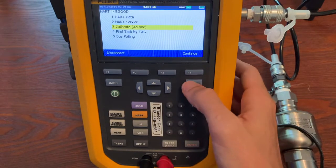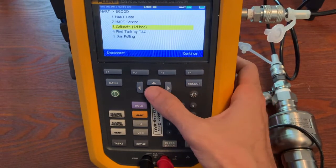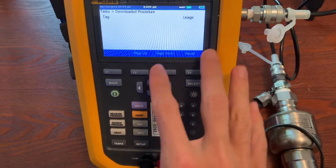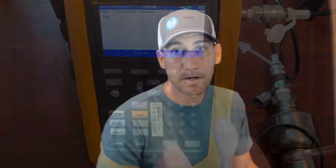Calibration ad hoc. That's what we're going to do today. So I'll come back to that in a second. Find task tag. So this is a smart calibrator. It's a documenting process calibrator, just like the 754, except this one only does pressure instead of pressure and temperature. But it does pressure automatically. So obviously it does a little better than the 754 for pressure.